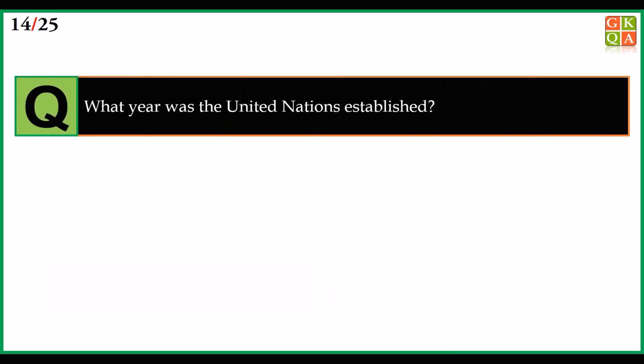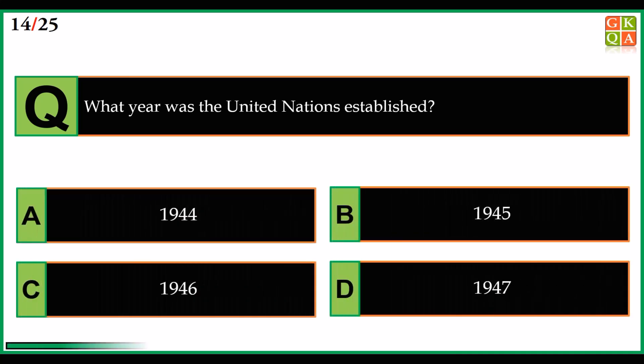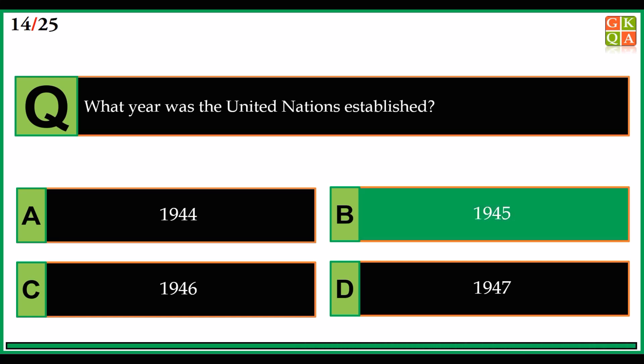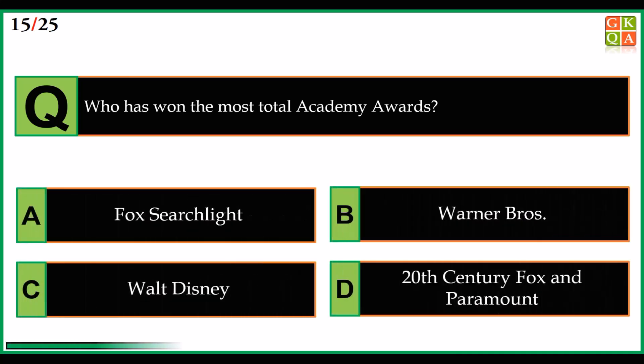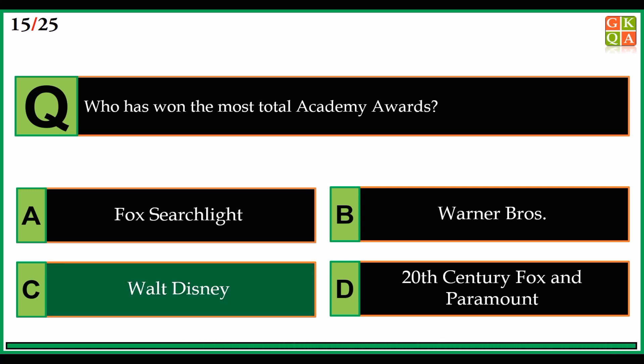What year was the United Nations established? Answer: option B, 1945. Who has won the most total Academy Awards? Answer: option C, Walt Disney.